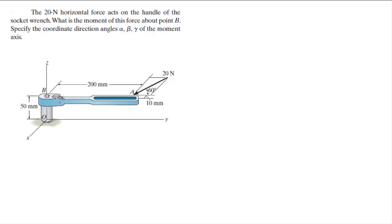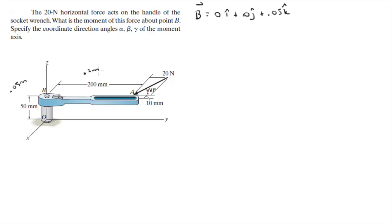They want you to find the moment around B, so find point B which sits at 0i plus 0j plus 0.05k. Note that I've already converted to meters: 50 millimeters is 0.05 meters, 0.2 meters, and 0.01 meters. Point A is negative 0.01i plus 0.2j plus 0.05k.